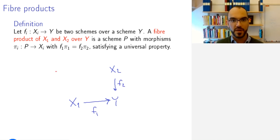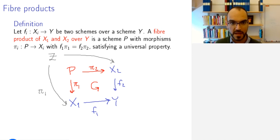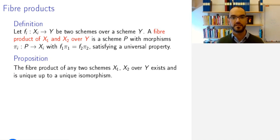And a fiber product of X1 and X2 is a scheme P with morphisms PI1 to X1 and PI2 to X2, making this diagram commute and satisfying a universal property with respect to this. Meaning that if there is another scheme Z with such maps, PI1' and PI2', then there is a unique map from Z to P that fits into this diagram. And so, P is universal with this property. And the claim is that the fiber product of any two schemes exists and is unique up to a unique isomorphism.